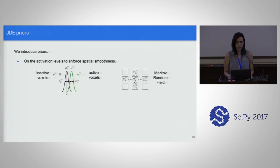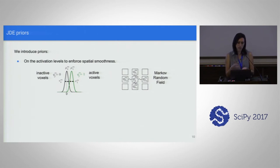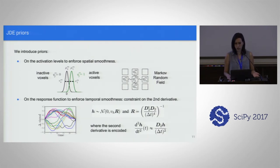We introduce priors — for example, on the activation levels to enforce spatial smoothness, because we know that neighboring voxels will have a similar signal. We model it with a Gaussian mixture model considering two classes: active and inactive voxels, conditional on assignment labels modeled through a Markov random field. For temporal functions, we enforce temporal smoothness because physiologically we know the response will be smooth, constraining the second derivative of the HRF through its covariance matrix.